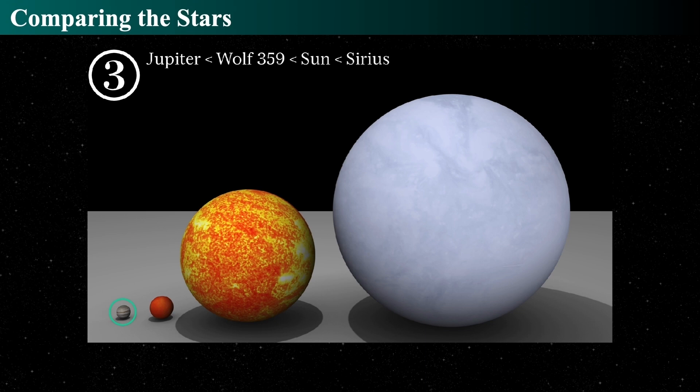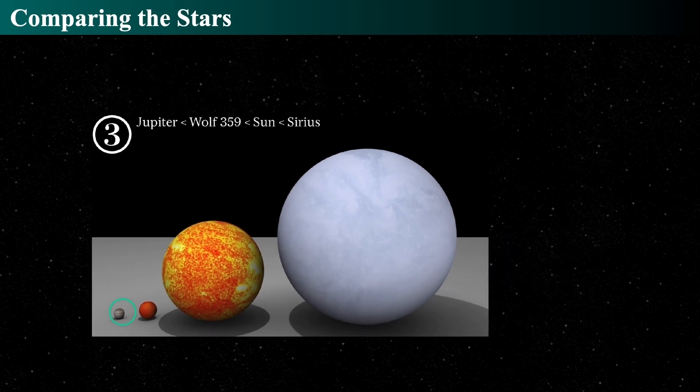And the brightest star in the sky, Sirius, is an A-type star. And it's physically larger than the Sun. And that star is about seven light years away. And it's a big star. And if you go out in the winter sky, you can see Sirius in the sky.